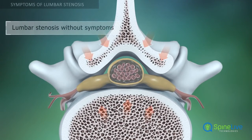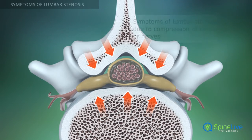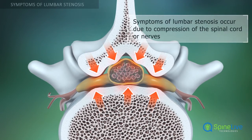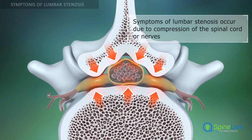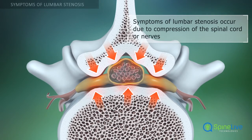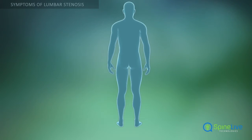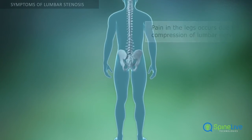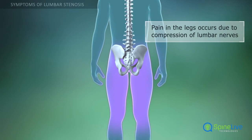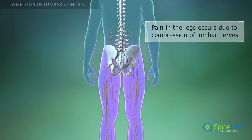Symptoms of lumbar stenosis occur when the spinal cord and its nerves are compressed. In many cases, lumbar stenosis has no symptoms. Pain in the legs is the main symptom of lumbar stenosis; it occurs due to compression of nerves.